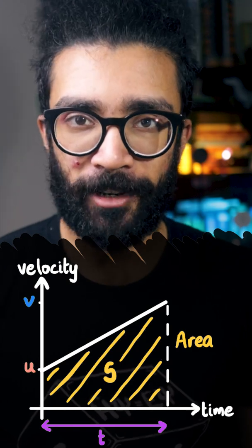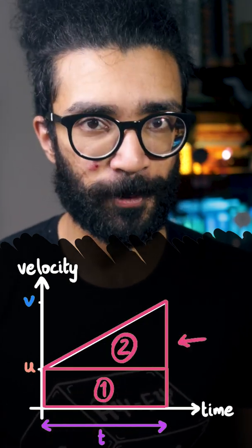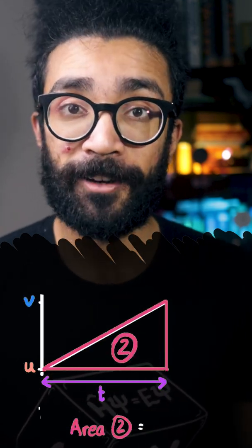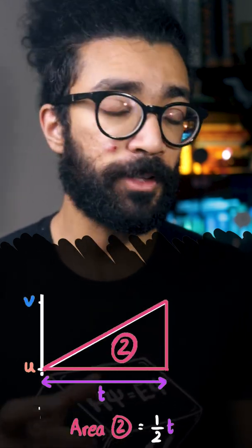So we can split this area up into two sections: this rectangle and this triangle. The rectangle has an area u times t, and the triangle has an area of half times t times v minus u.